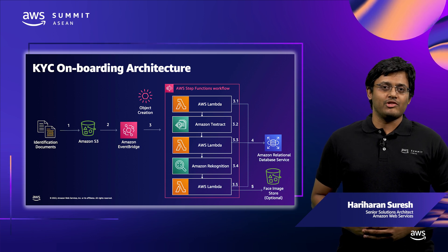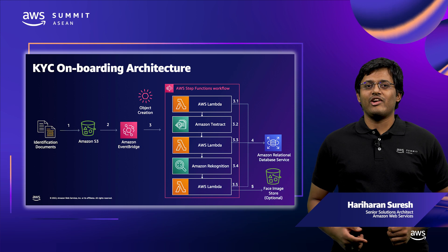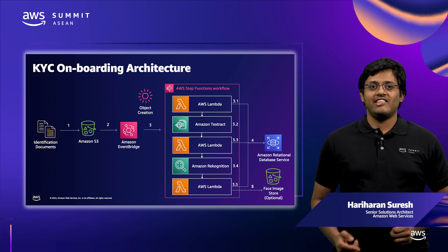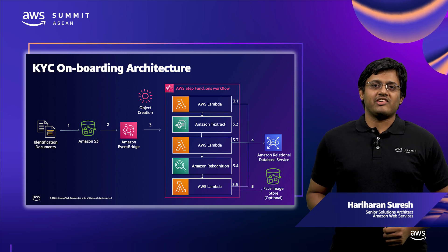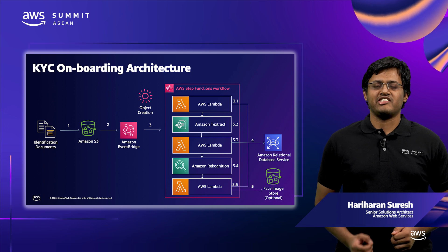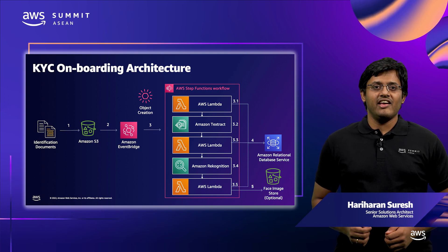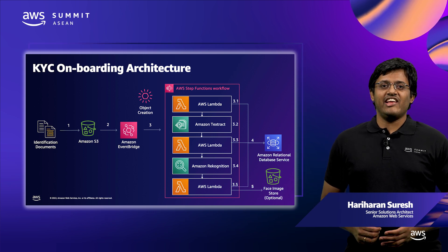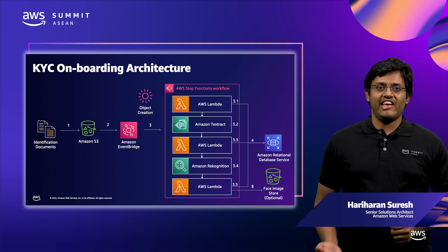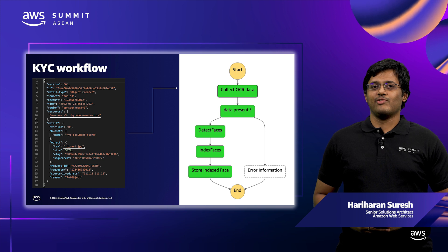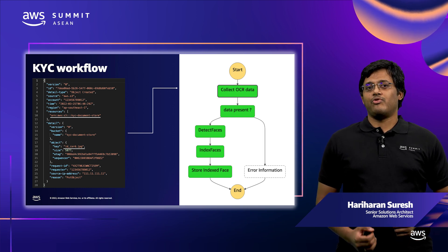Here are the AWS services used for this onboarding automation task. Amazon Simple Storage Service stores the uploaded documents. When a new object is uploaded in Amazon S3, Amazon EventBridge triggers the Step Function, which is the serverless orchestration service. The Step Function invokes Amazon Textract, powered by machine learning, for OCR and data extraction. Amazon Rekognition Service automates image and video analytics using machine learning and is used for detecting and indexing the face in the identity documents. AWS Lambda, a serverless function-as-a-service, is used to store the extracted information into the database or file storages. The Step Function workflow can be customized for any processing logic per your business needs.